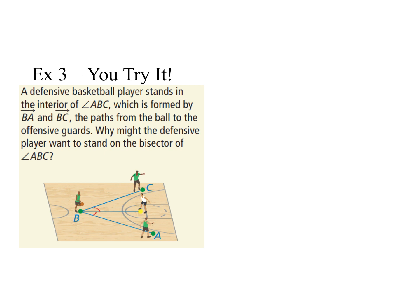Please pause the video and try this on your own, then come back for the solution. A defensive basketball player stands in the interior of angle ABC, formed by rays BA and BC — the paths from the ball to the offensive guards. Why might the defensive player want to stand on the bisector of angle ABC? By the angle bisector theorem, the defensive player will be equidistant from points C and A if he stands on that bisector.